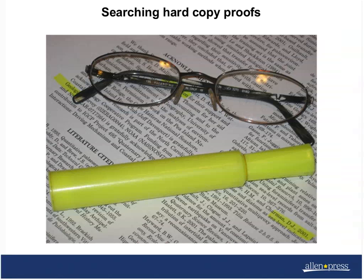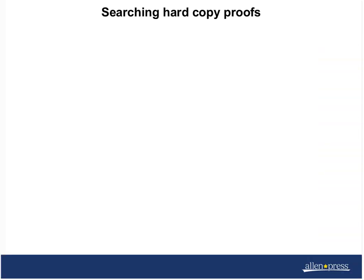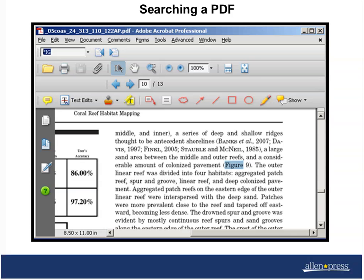Searching hard copy proofs can prove to be a cumbersome task, especially if there's a global correction that you want to mark, something that you need to check in various places. You end up squinting at the page and spending lots of hours looking for the right words. By comparison, you can search directly in a PDF to find particular words or phrases, and that makes it a lot easier to search if you're looking for something specific.